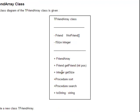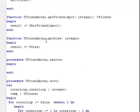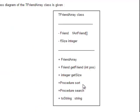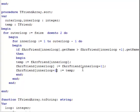Next one will be get size. That must be a function as well because it's a getter. Get size must merely return the size of the array. Function TFriendArray dot get size returns an integer and the result is merely fSize. Next will be the procedure to sort the array alphabetically, and I'm assuming that we are going to sort according to name. Here's our sort procedure — it doesn't have any parameters because we will always sort according to name in this case.